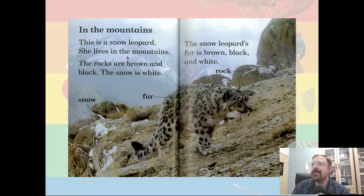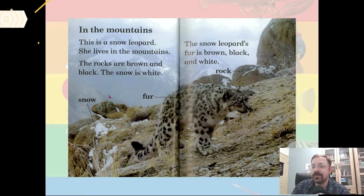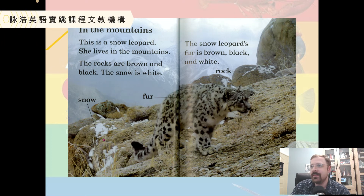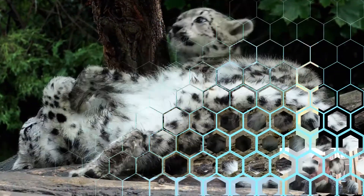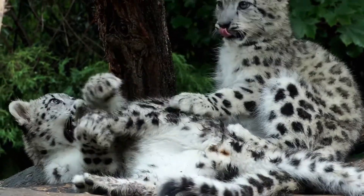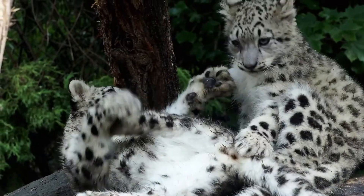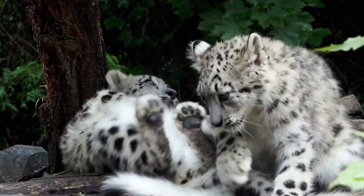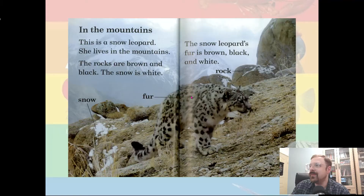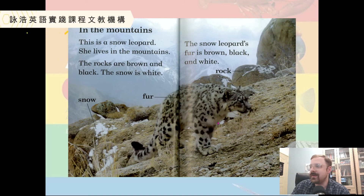This is a snow leopard. She lives in the mountains. The rocks are brown and black. The snow is white. This is snow. This is the animal's fur. And this is a rock. The snow leopard's fur is brown, black, and white — black spots, brown spots, and some white underneath.